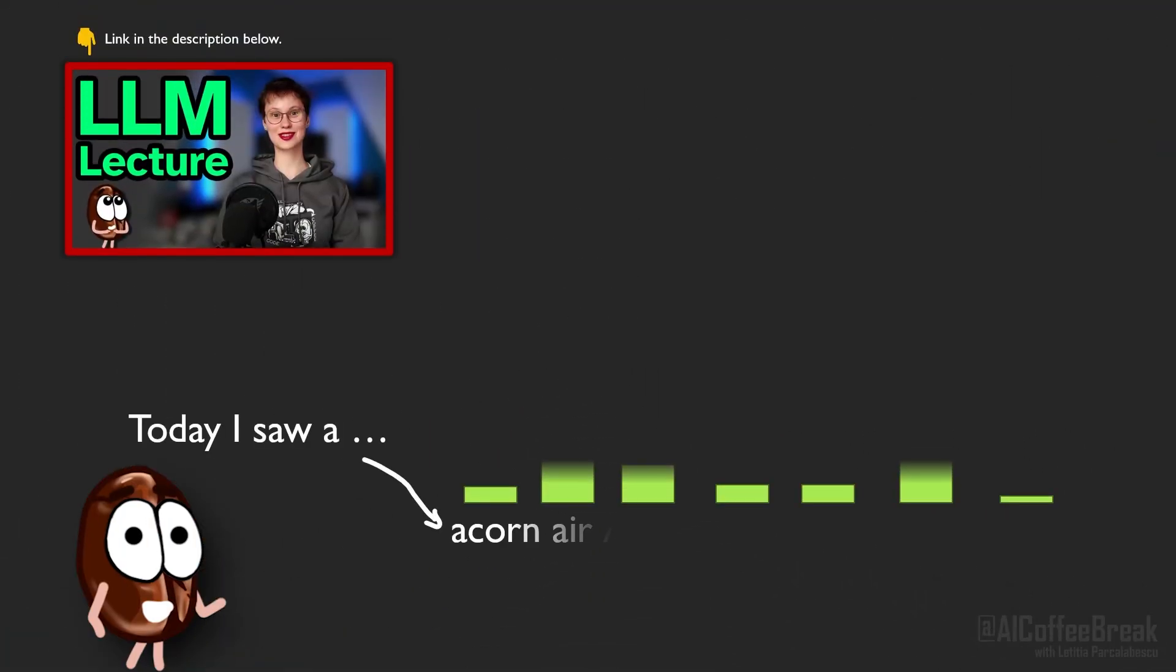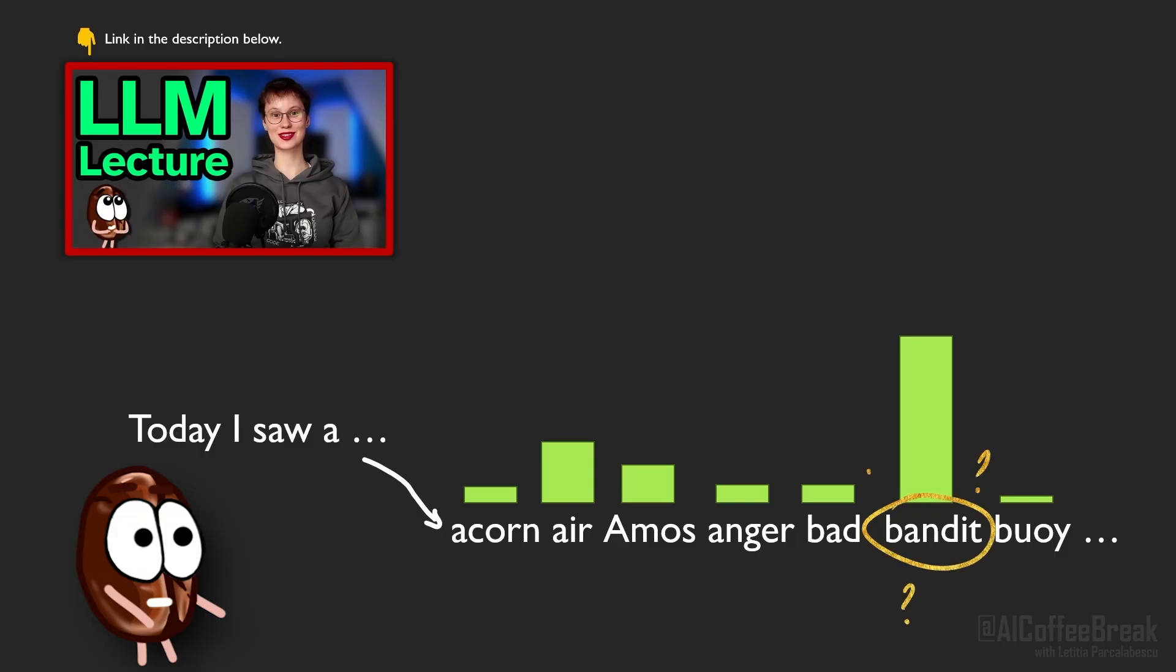Ever wondered how large language models like ChatGPT decide which word to say next? You might already know from LLM basics that after each word, an LLM assigns probability to every possible next word. And then it must pick one. Sometimes it chooses the most likely word and sometimes it goes for something more surprising.